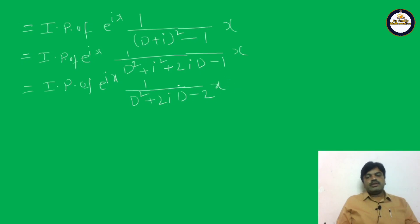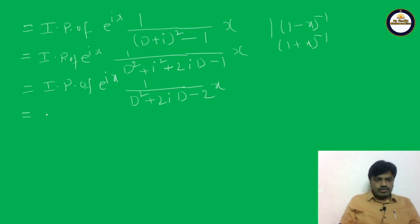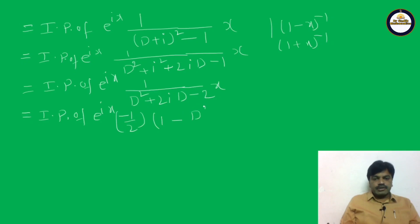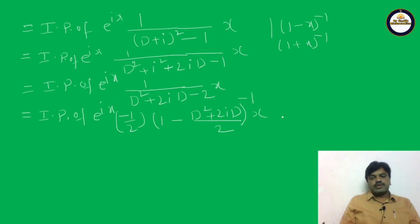Apply binomial expansion — either (1 - x)^(-1) or (1 + x)^(-1). Take out -2 as a common factor to get: imaginary part of e^(ix) · (-1/2) · (1 - (D² + 2iD)/2)^(-1) · x.